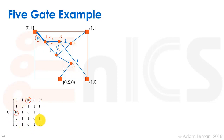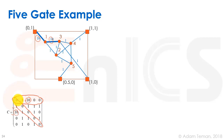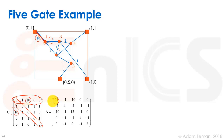To build our A matrix from the connectivity matrix, we take all off-diagonal numbers and negate them. Then for the diagonal entries we sum up the row. For row one, the sum is 10 plus 1, which is 11. Gate one also has a connection to a pad worth 10, so we add 10, giving us 21 in the first diagonal position.